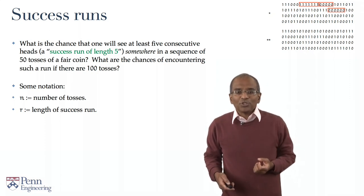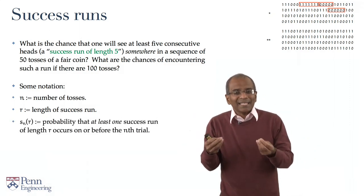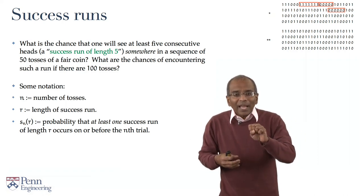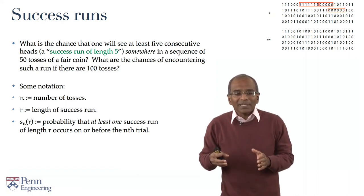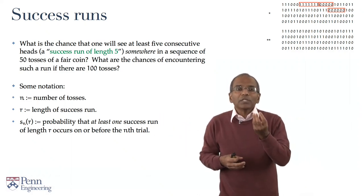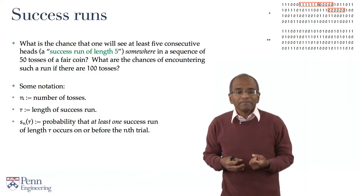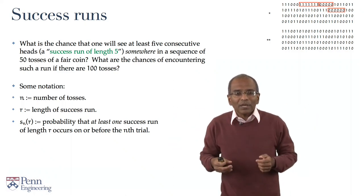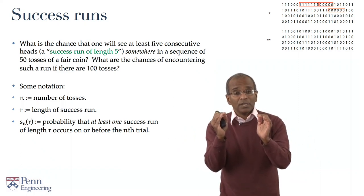Let's introduce some more notation. We are interested in success runs. So, let's call s the probability of obtaining a success run of the desired length. Now, s is parameterized by two variables. One, it depends on the number of tosses of the coin n. And two, it depends upon the number of successes consecutive that we wish to acquire. Accordingly, let's introduce a subscript n to keep track of how many tosses there were and provide the length of the success run r as an argument to s.